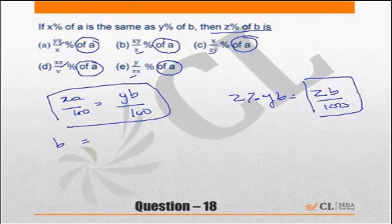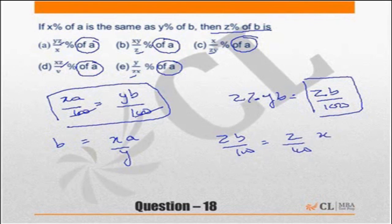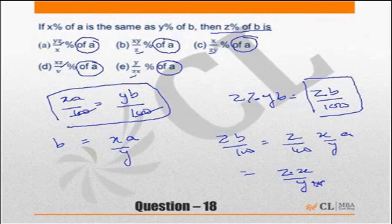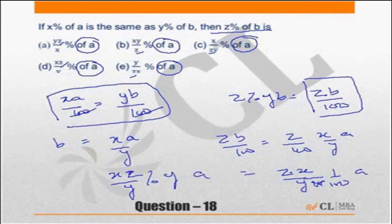So zb upon 100 should be equal to z upon 100, and b is nothing but xA upon y, which is nothing but z upon y into xA upon 100, which is nothing but z upon y percentage of a.